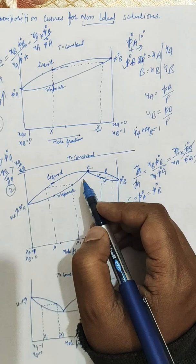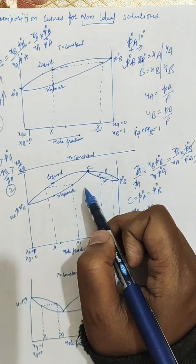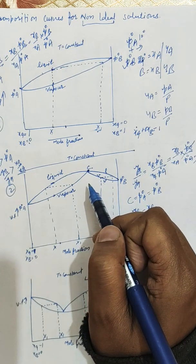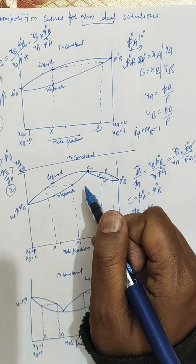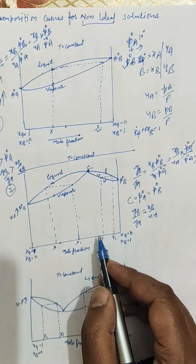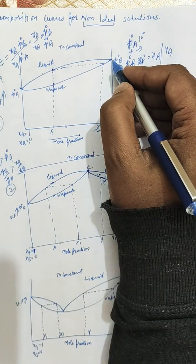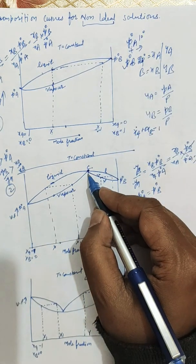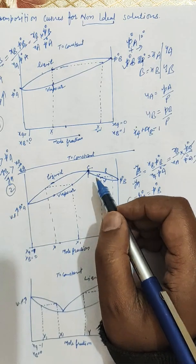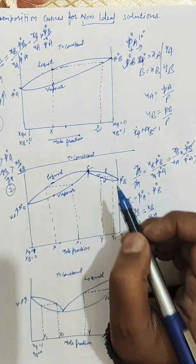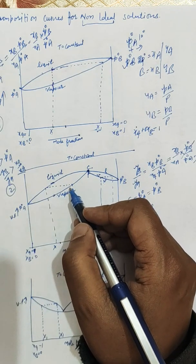Up to point C, the vapor phase is richer in component B than the liquid. However, after point C it is observed that the vapor phase becomes richer in component A than the liquid. The curve up to point C is similar to the Type 1 curve, whereas after point C the reverse position takes place.